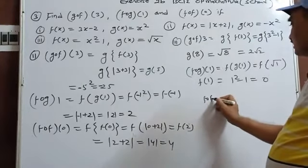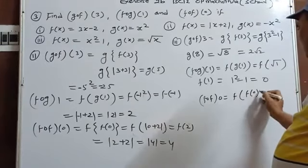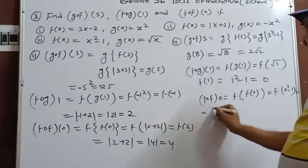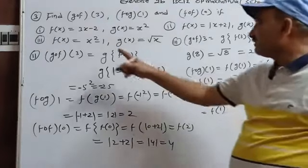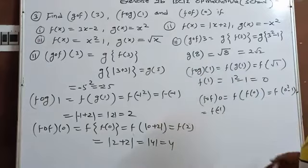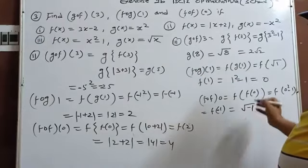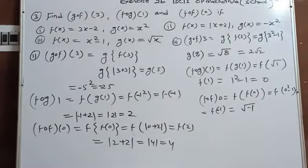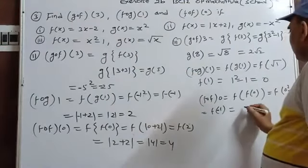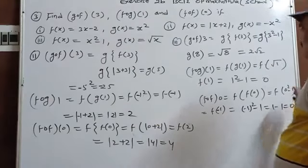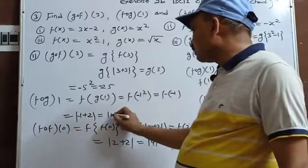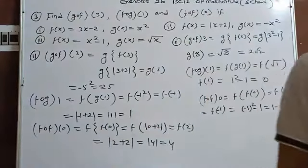fog(0)=f(g(0))=f(√0)=f(0). Wait, g(0)=√0=0, then f(0)=0²-1=-1. So f(-1) would need √(-1), which is not defined. But if we compute directly: f(0)=-1, giving a result of not defined via this route. Actually f(-1) via the f function: f(-1)=(-1)²-1=0. So the answer is 0.